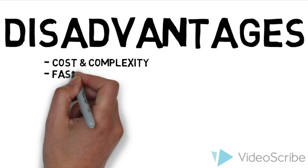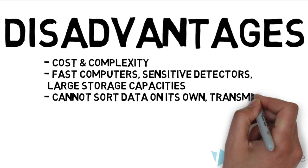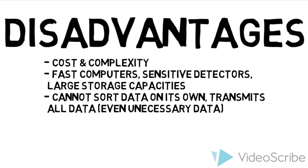The primary disadvantages are cost and complexity. Fast computers, sensitive detectors, and large data storage capacities are needed for analyzing hyperspectral data. Significant data storage capacity is necessary since hyperspectral cubes are large, multidimensional datasets potentially exceeding hundreds of megabytes. All of these factors greatly increase the cost of acquiring and processing hyperspectral data. One of the hurdles researchers have faced is finding ways to program hyperspectral satellites to sort through data on their own and transmit only the most important images, as both transmission and storage of that much data could prove difficult and costly.